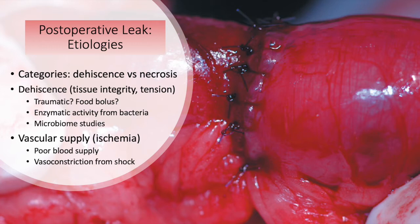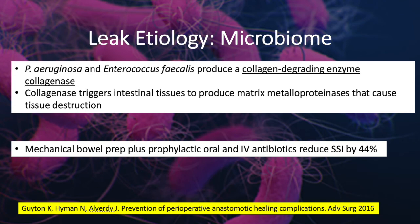Vascular supply is clearly critically important and can be compromised from either surgical technique or patient factors. Despite good technique and blood supply, leaks still occur. We can look to the possible impact that the microbiome has on the anastomosis. Certain microbes like Pseudomonas and Enterococcus produce a collagen-degrading enzyme called collagenase, which then triggers the production of matrix metalloproteinases that cause further tissue destruction. This cascade has supported the indication for mechanical bowel prep and oral and IV antibiotics as prophylactic measures against leak and surgical site infection.